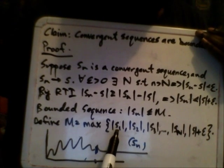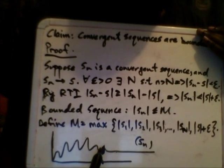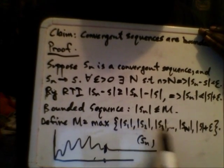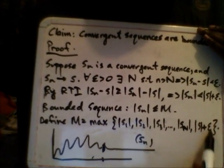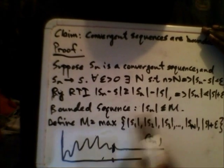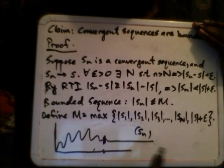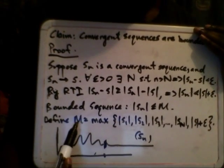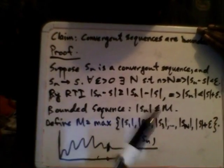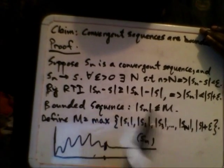That's why we pick the absolute values of S₁, S₂, S₃, all the way to Sₙ where n equals capital N. Capital N is the point after which everything starts converging, bounded by absolute value of S plus epsilon. We pick the largest number from all of this, and doing so gives us the correct M such that the entire sequence is always bounded when it's converging.